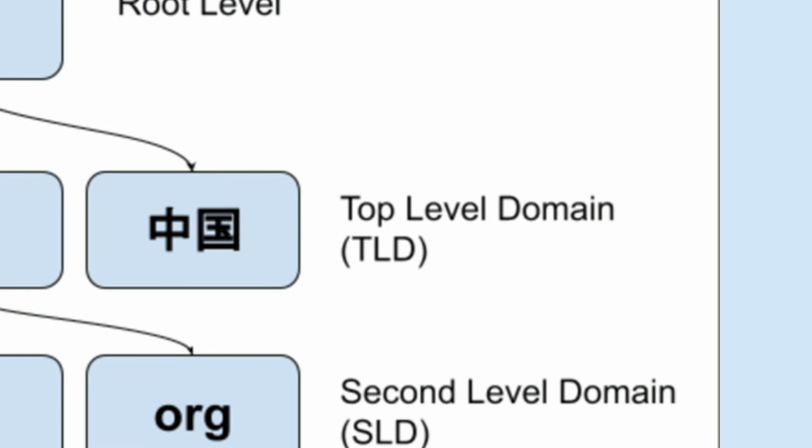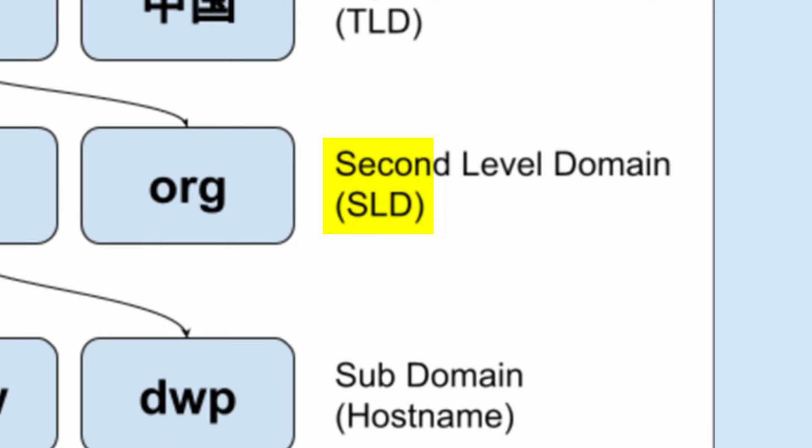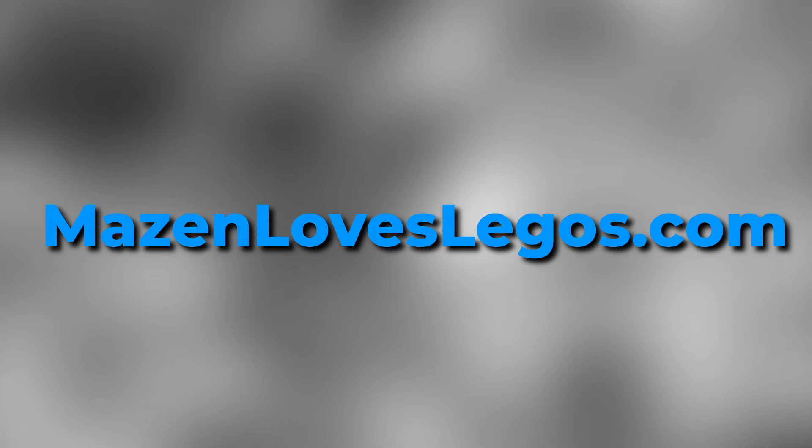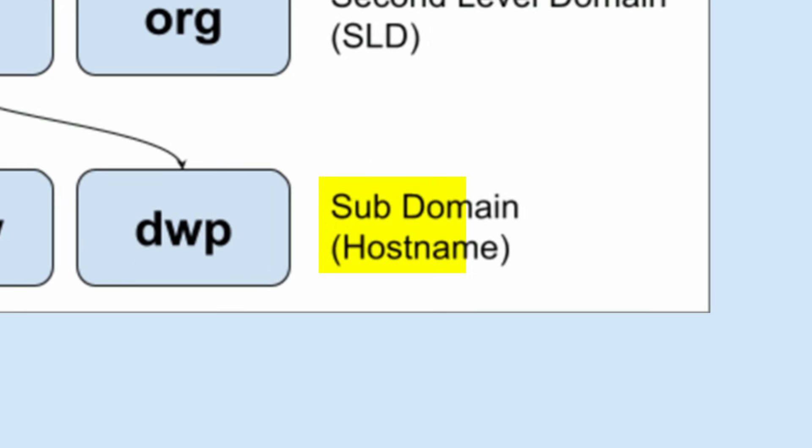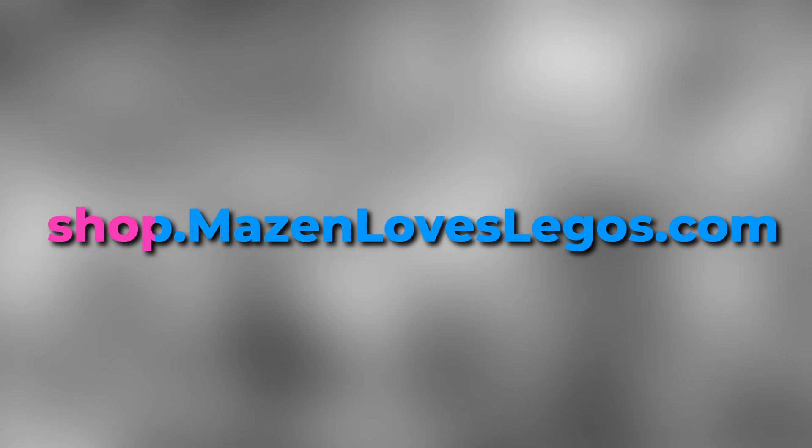One more step down the ladder and we find the second-level domains — these are the main part of a website's address, like 'mazenloveslegos' in mazenloveslegos.com. You can really tell that I love Legos, right? Underneath that we have the subdomain level, which is used to create extra sections or services of the same website — for example, shop.mazenloveslegos.com. Finally, at the very bottom we have the host level, which is the lowest level in the DNS hierarchy and represents the exact machines or servers themselves.